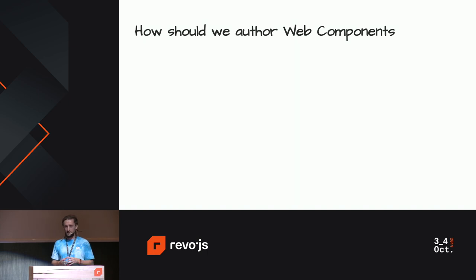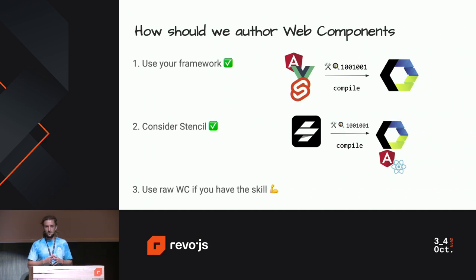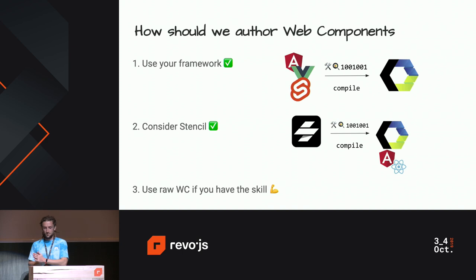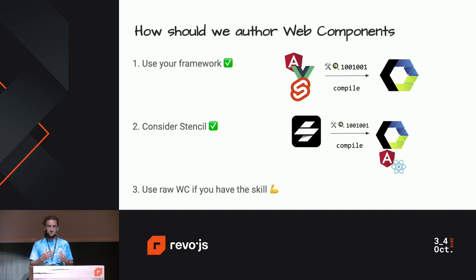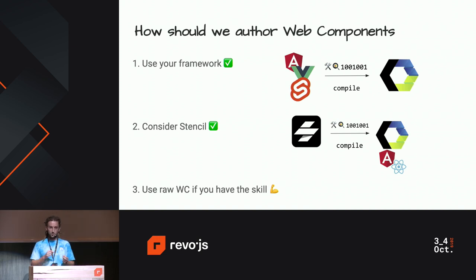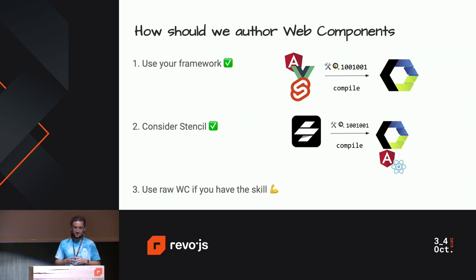If you're really going to use web components, I recommend three ways. Number one — the best way — just use your framework. Currently Angular, Svelte, and Vue.js can compile to web components. Number two, if you want to go really deep into web components, consider using Stencil, which is a compiler that uses web components and compiles to vanilla web components in a very optimized way. Soon the Stencil team will open source a compiler that can also compile to Angular components and React components — a very powerful feature. Number three, if you have the skill and the courage, just use raw web components and vanilla JavaScript.